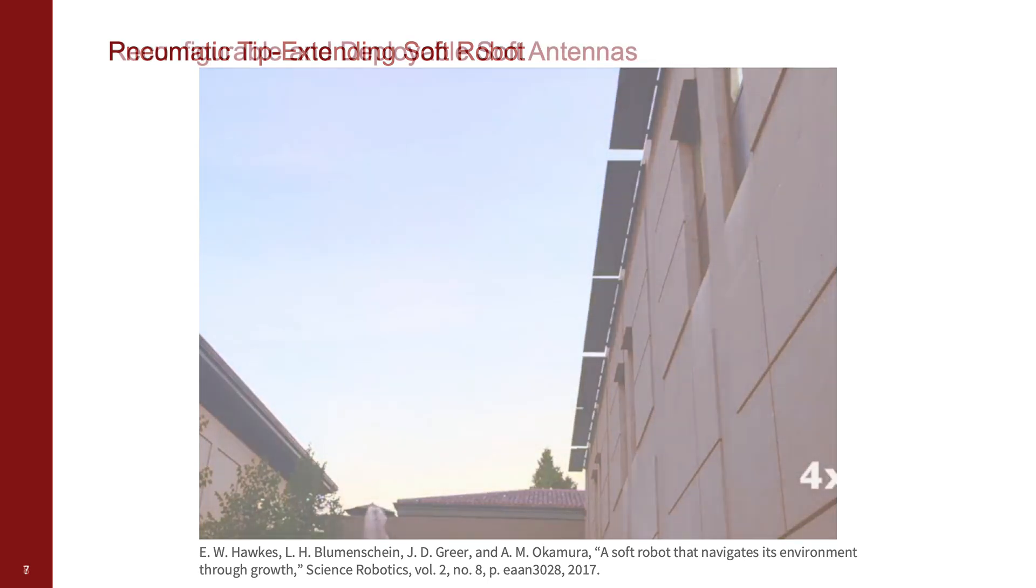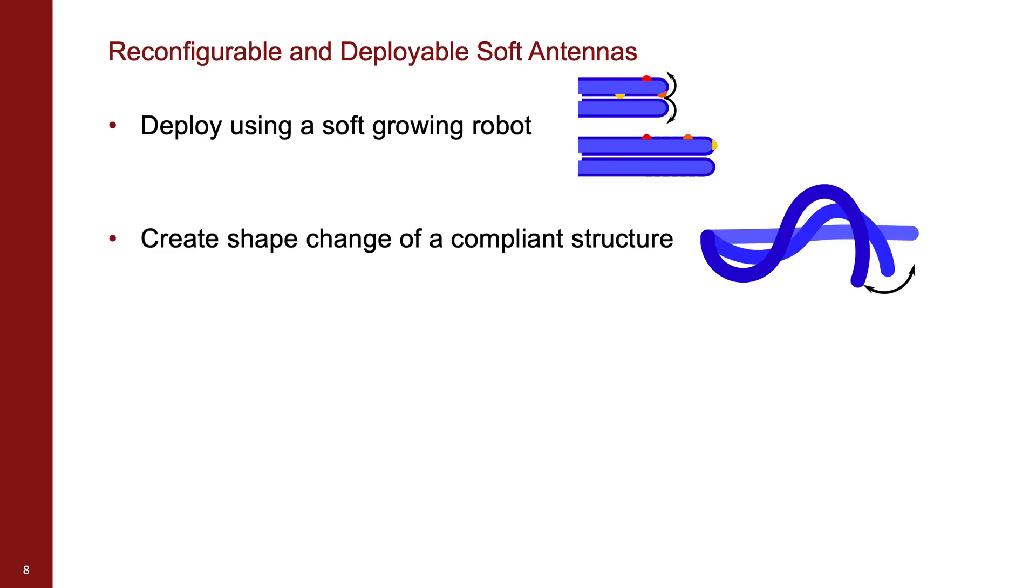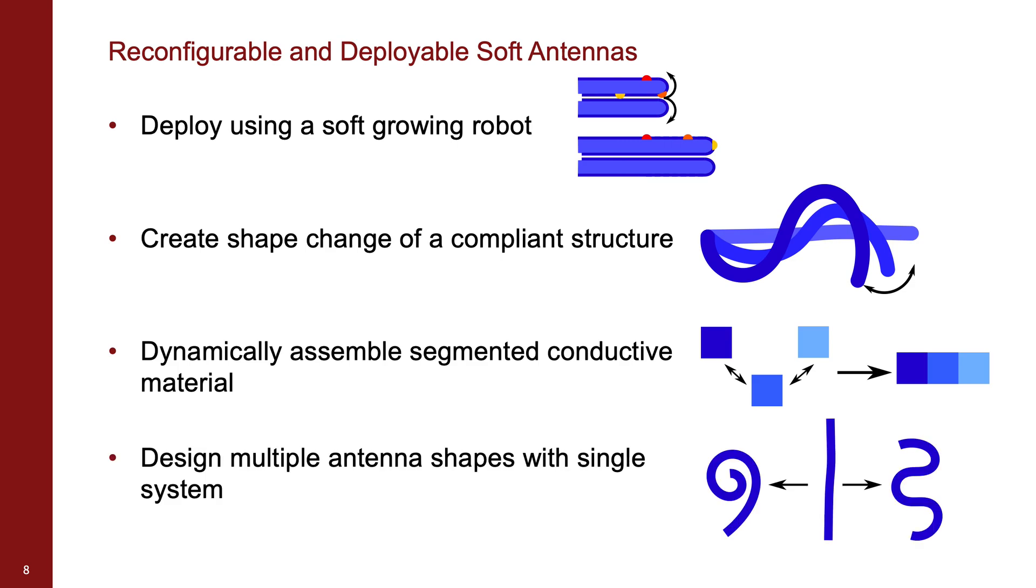In our application of tip growing robots to reconfigurable antennas, we follow a set of design principles. We create deployment using the growth degree of freedom. We achieve shape change through the compliant pneumatic structure of the robot. We dynamically assemble the EM structure from segmented conductors. And we demonstrate large shape change by transitioning between multiple antenna shapes.